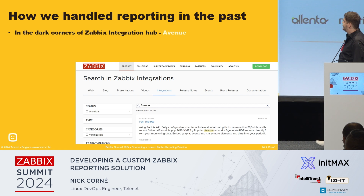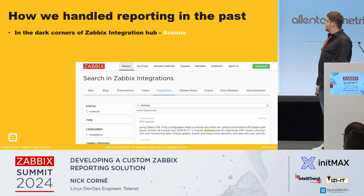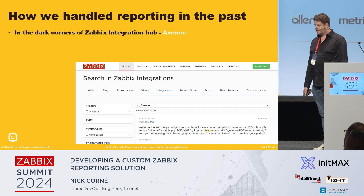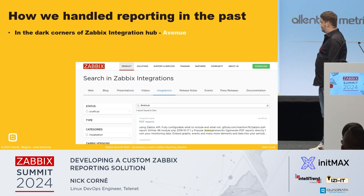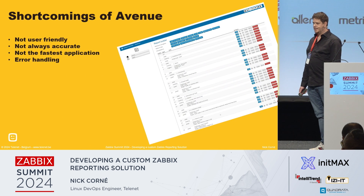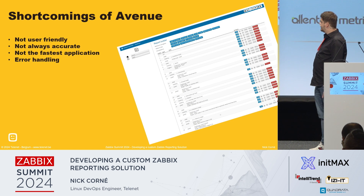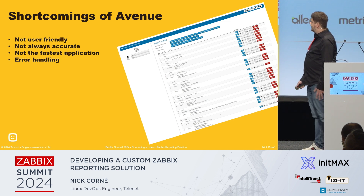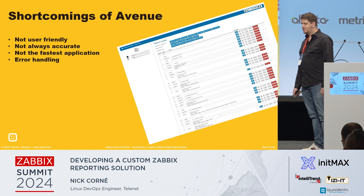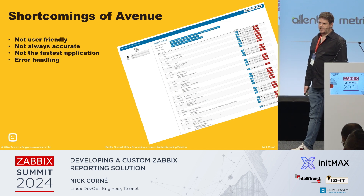So how did we used to do the reporting? In the dark corners of the Zabbix integration hub, you will still find Avenue. Avenue is a tool that we were using to generate those reports in the past. But there were some issues. It's not that user-friendly — it's flexible and you can add a lot of stuff, but it's not user-friendly. It's also not the fastest application, which means it could take 40 minutes or two hours before the reports were generated, so we scheduled that at night mostly.